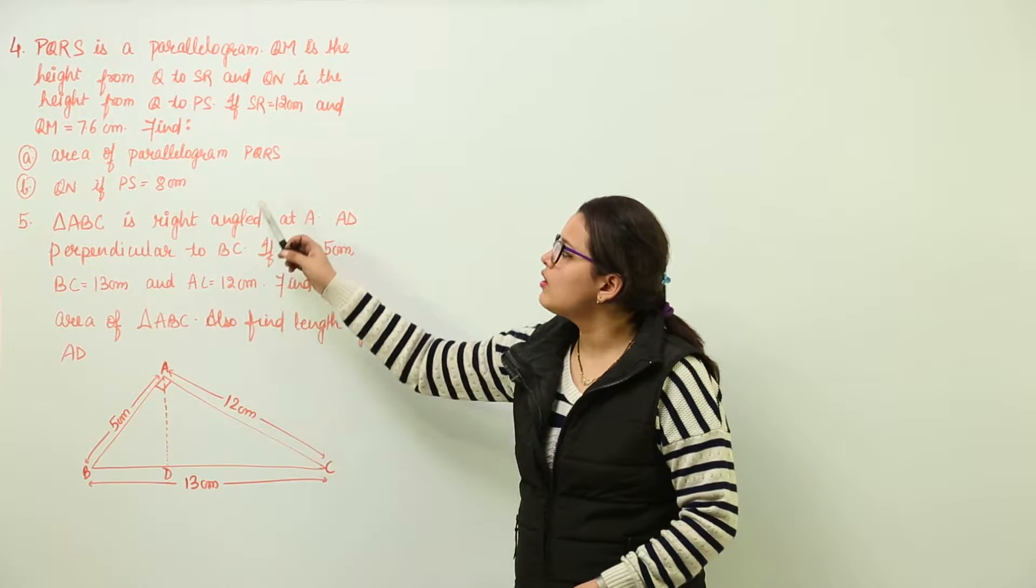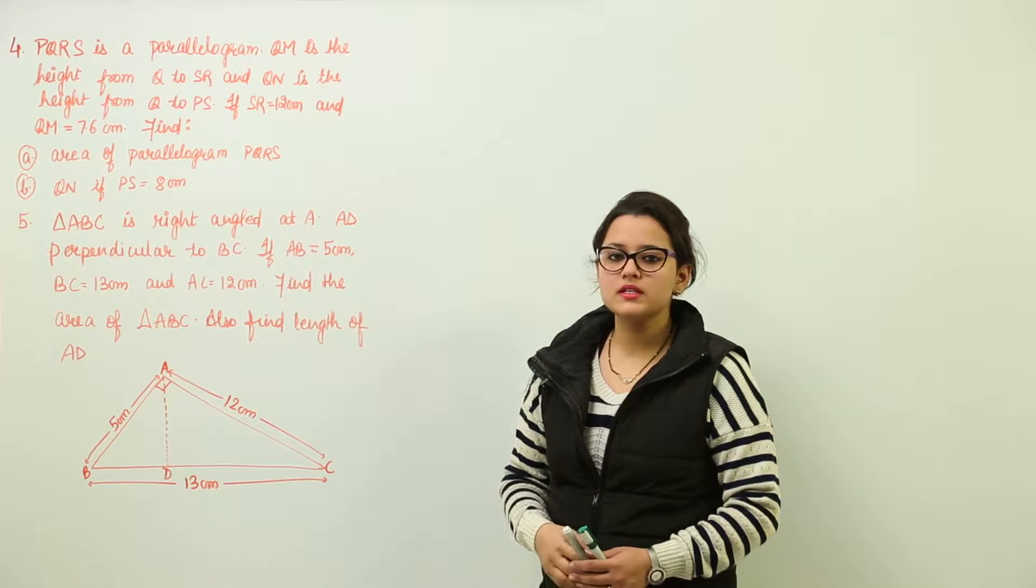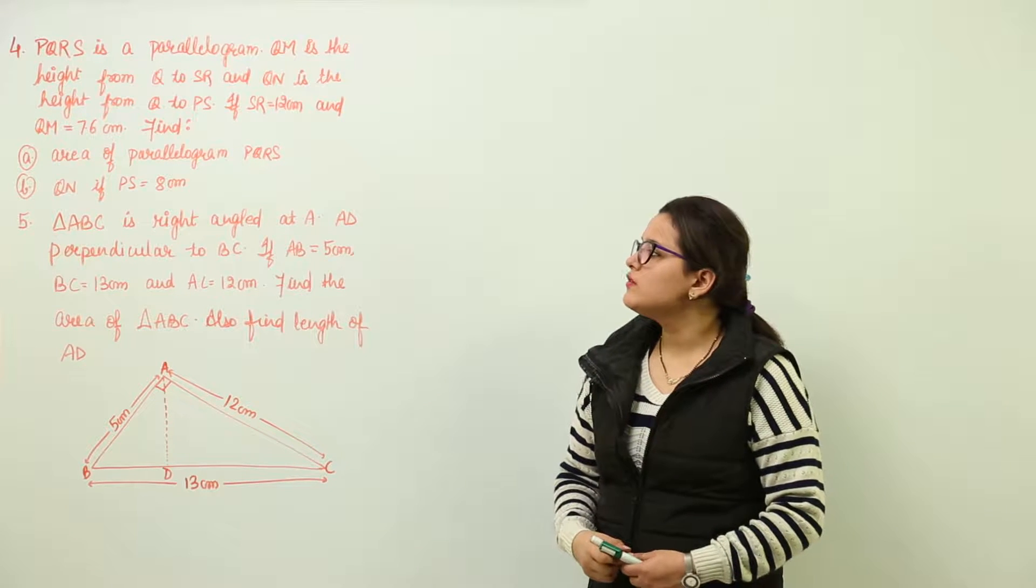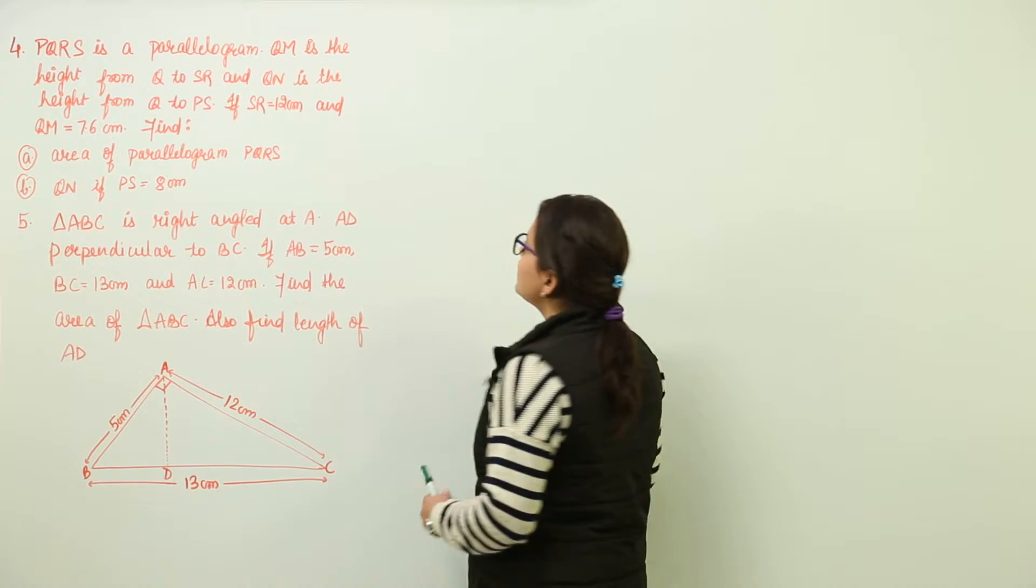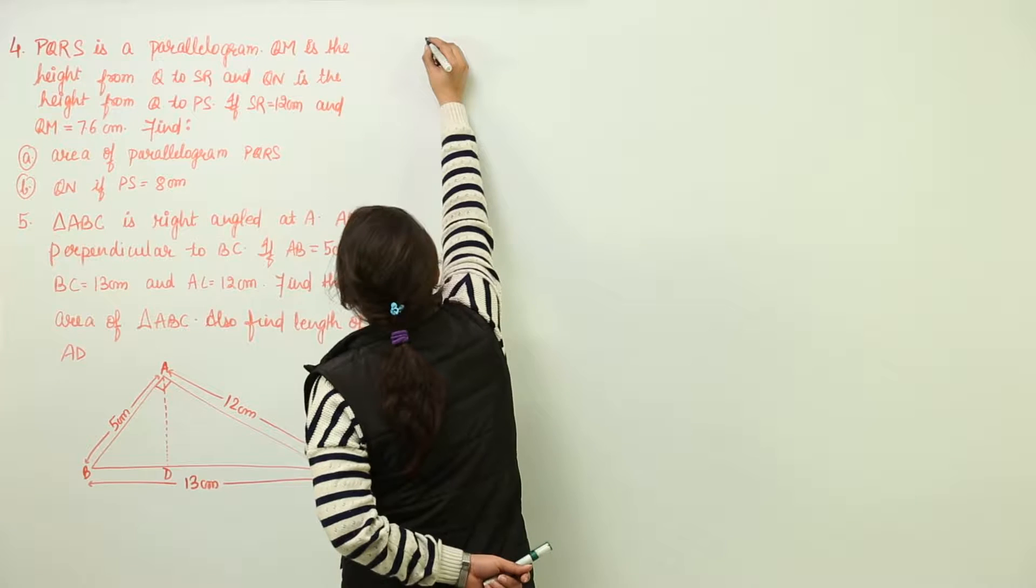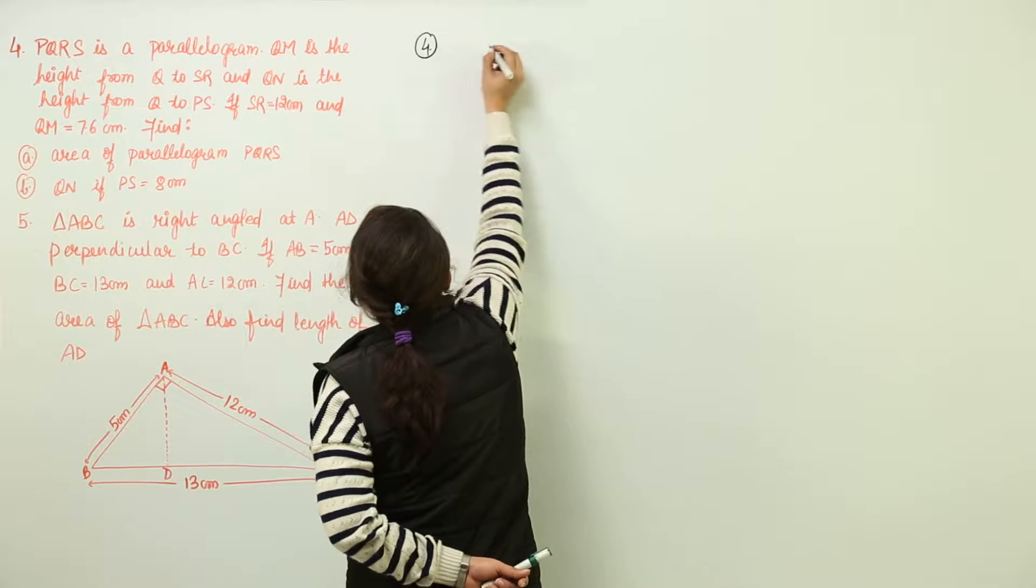we have to find out the area of parallelogram PQRS and QN if PS is equal to 8. So first of all, let us draw the figure for this one. The figure is going to be a parallelogram only. So we will draw a parallelogram at first.